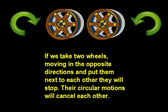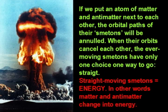If we take two wheels moving in opposite directions and put them next to each other, they will stop — their circular motions will cancel each other. If we put an atom of matter and an atom of antimatter next to each other, the orbital paths of the SMETONs will be annulled. When their orbits cancel each other, the ever-moving SMETONs have only one choice — one way to go: straight. Straight-moving SMETONs are energy. In other words, matter and antimatter change into energy — into straight-moving SMETONs.